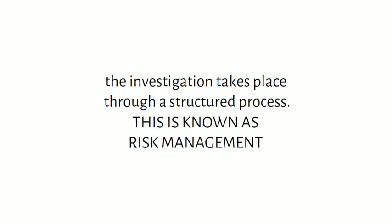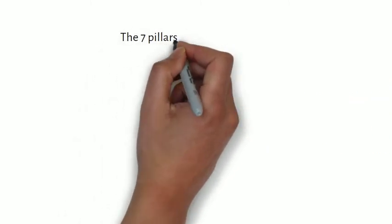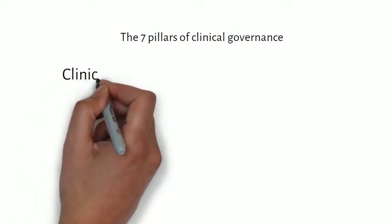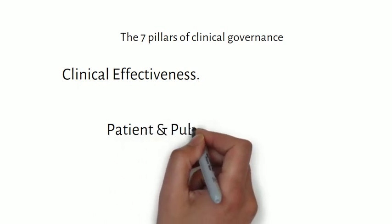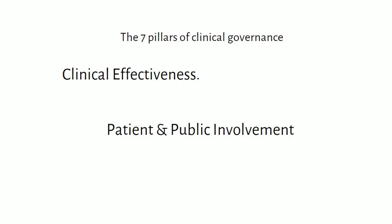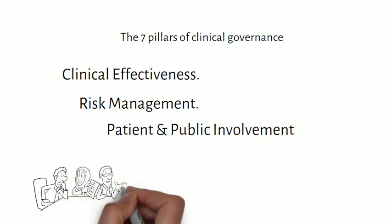Clinical governance is an overarching term used to describe many kinds of activities that take place in the health facility. The audit is a part of clinical governance, and there are six other components also called pillars. These pillars include clinical effectiveness — ensuring the correct treatment is provided to the patient for the best outcome — and risk management for identifying any threats to patient, staff, or the facility. Clinical governance also ensures public involvement in setting up services and care systems so that the facility is easily approachable by the community.